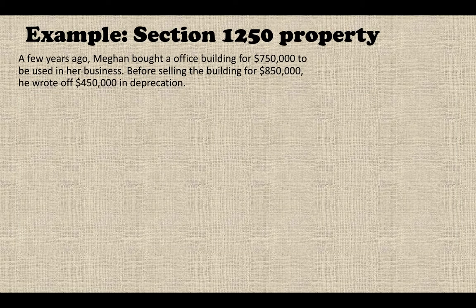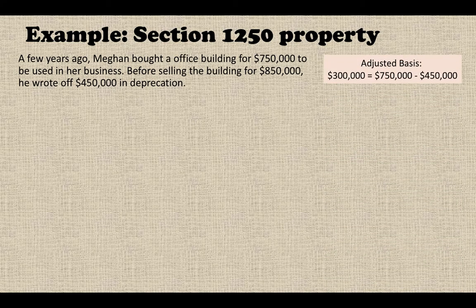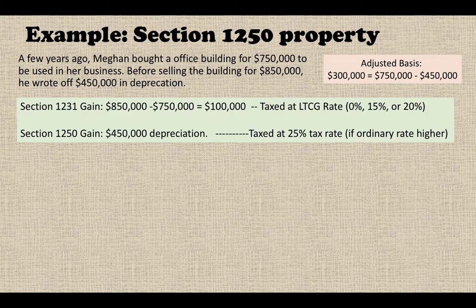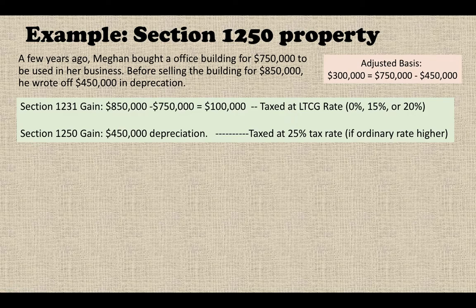Let's look at an example. A few years ago, Megan bought an office building for $750,000 to be used in her business. Before selling the building for $850,000, she wrote off $450,000 in depreciation. The new adjusted basis is $300,000, which equals the original cost minus the depreciation. When she sells at $850,000, having bought at $750,000, she produces a $100,000 gain. This gain is a Section 1231 gain taxed at the long-term capital gain rate of 0 percent, 15 percent, or 20 percent.